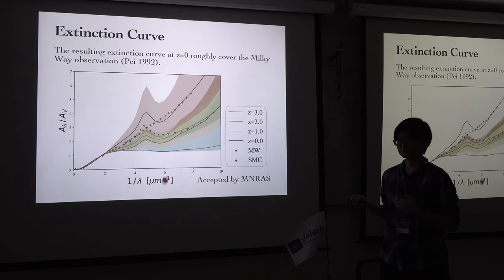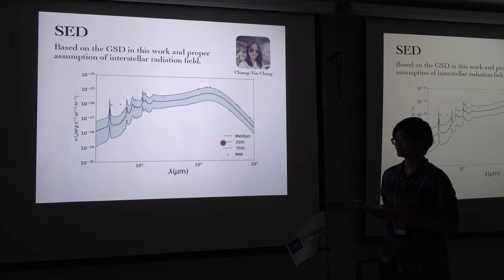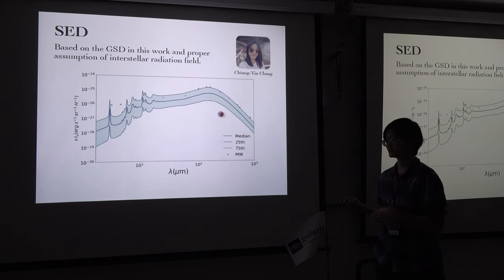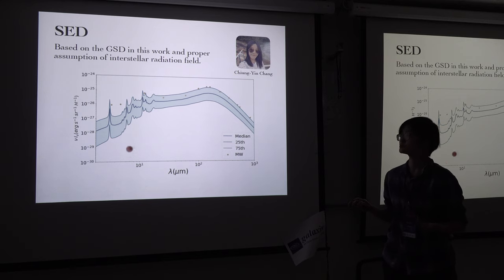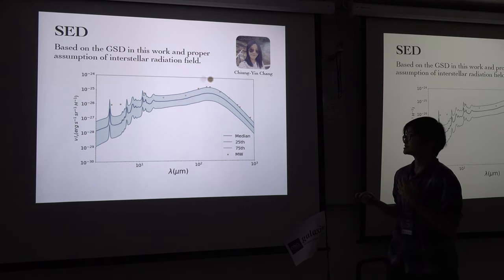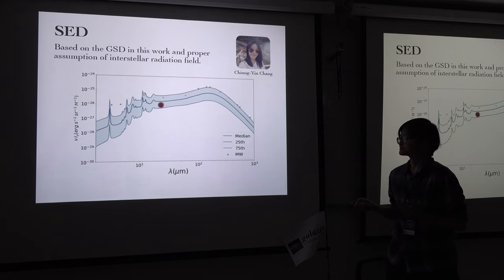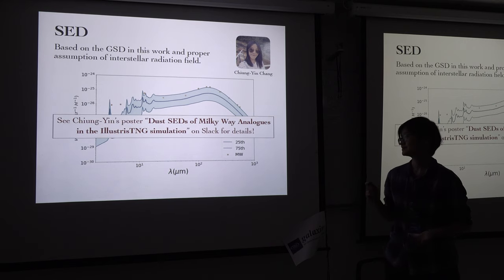Finally, I want to introduce SED results, because this is a part that people can pursue with JWST or any other mid-infrared and far-infrared observations. This is work done by Chong Ying Zhang, our undergraduate student, who will also put up a poster. She calculated the SED based on our grain size distribution and a proper assumption of the interstellar radiation field. The blue curve is the calculation, and the dots are measurements from the Milky Way — our SED roughly covers the observations.